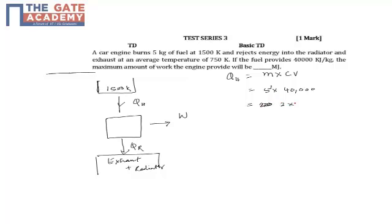2 into 10 power 5. We get 2 into 10 power 5, kilojoules. Or the other way, 10 power 3, so 200 megajoules of energy we get by burning the fuel.